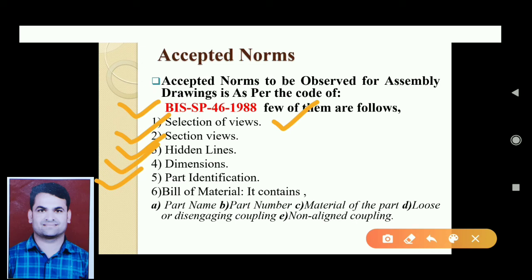The fifth norm is part identification. Parts are identified in assembly drawings by a leader line with an arrow that points to the part; the other end of the leader has a circle or balloon showing the part detail number. The sixth and final norm is the bill of material, also known as BOM. It contains the part name, part number, material of the part, quantity per unit, and part description.